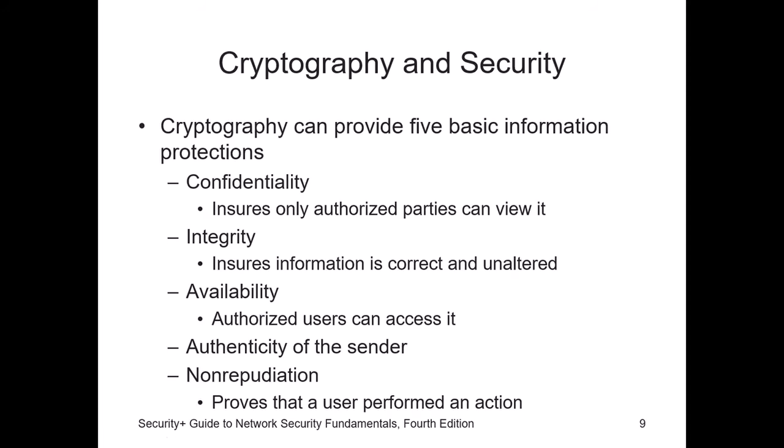Cryptography and security — write this down. Cryptography can provide five basic information protections. Confidentiality means only authorized users — the sender and receiver — will be able to see the data. Protecting the integrity of the data means you want to make sure that the data you are transmitting is the data that is received. Protecting the availability of the data means authorized users can access specific resources whenever they want to.